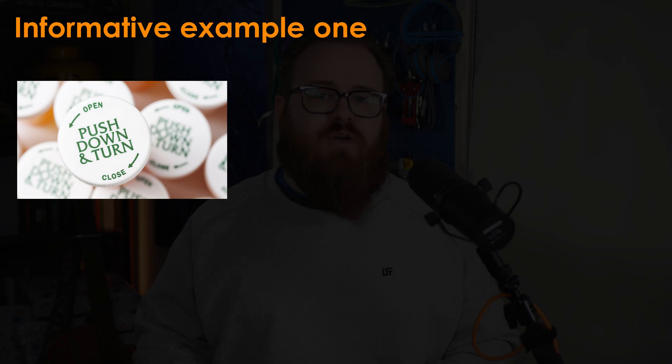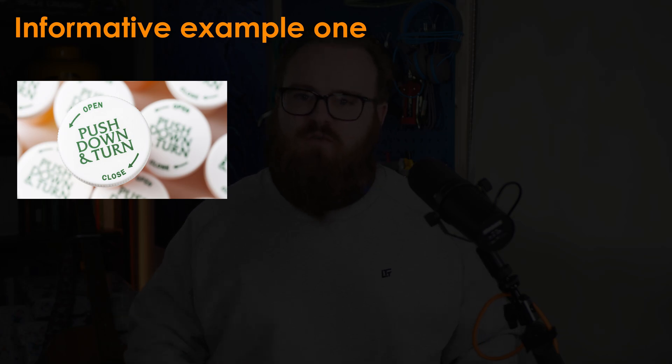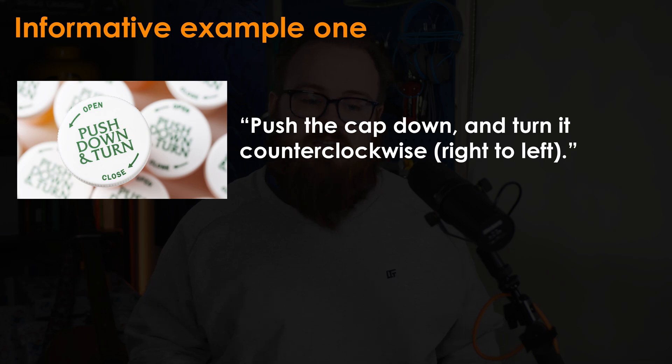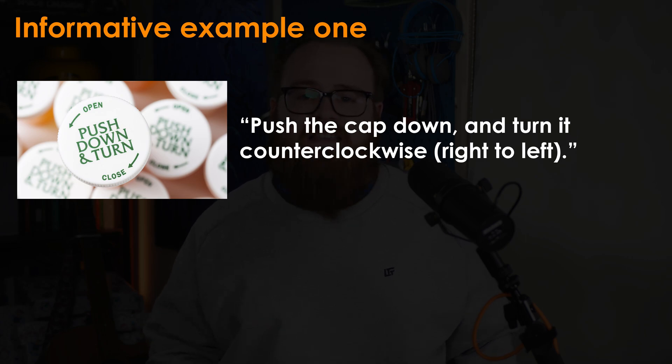Let's start with some interesting examples. Informative images are images that are essential to conveying the information we need to give to the user. In this example, you can see the top of a medicine bottle — more specifically a safety lid. Perhaps in the text around this, we're talking about why these are used and what the benefits are. Here in the alternative text for this image, we might put 'push the cap down and turn it counterclockwise' and then in brackets 'right to left'. This alternative text assumes that this image is essential to understanding the function of this lid.